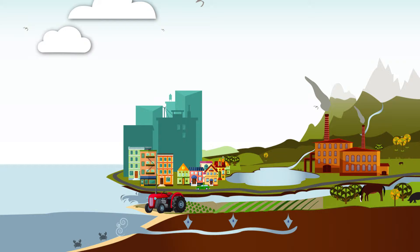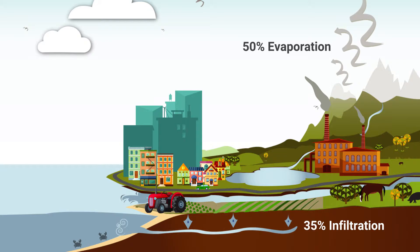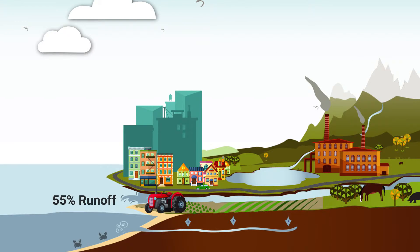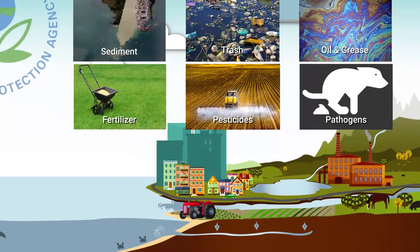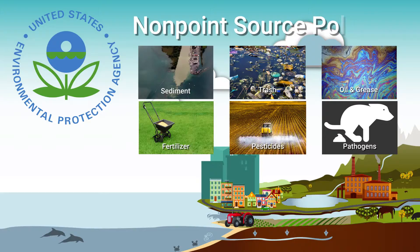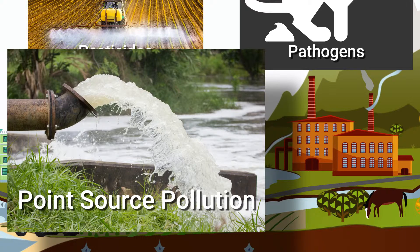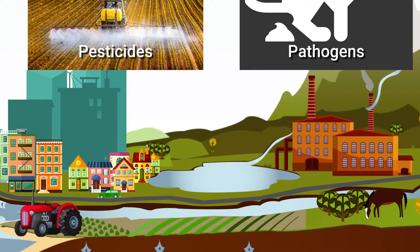Surfaces such as roofs, roads, parking lots, and even manicured lawns prevent rain from absorbing into the ground. When areas develop, more rainwater is converted to stormwater runoff, carrying with it a variety of pollutants. The Environmental Protection Agency classifies these as non-point source pollution because they don't originate at a single source, like a pipe coming out of a factory or a wastewater treatment plant. These point sources are heavily regulated through permitting.